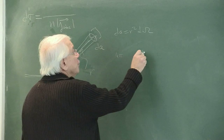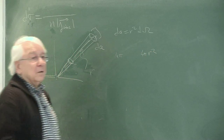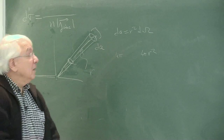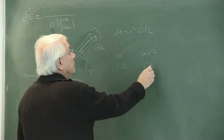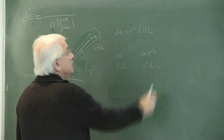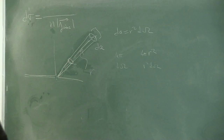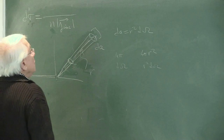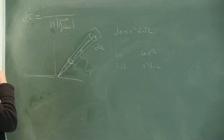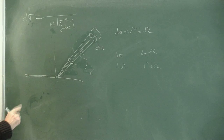dA equals R² dΩ. This is obvious: if 4π solid angle is associated with area 4πR², then dΩ is associated with R² dΩ. It is a primary school relationship.